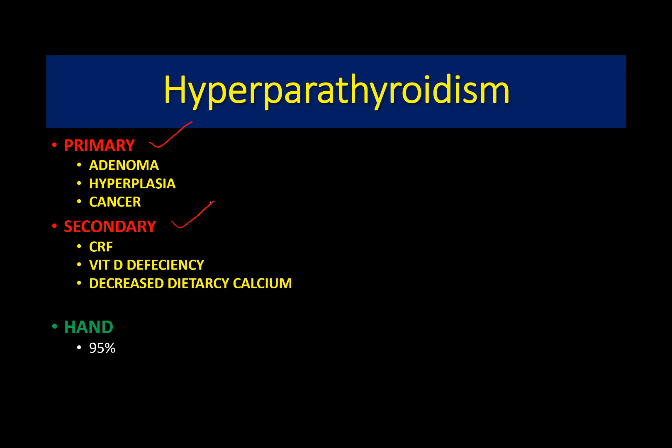In primary hyperparathyroidism, adenoma is the most common cause, constituting up to 90% of cases. The second most common cause is hyperplasia of the parathyroid glands, which can involve one gland or multiple glands. The least common cause is parathyroid cancer.